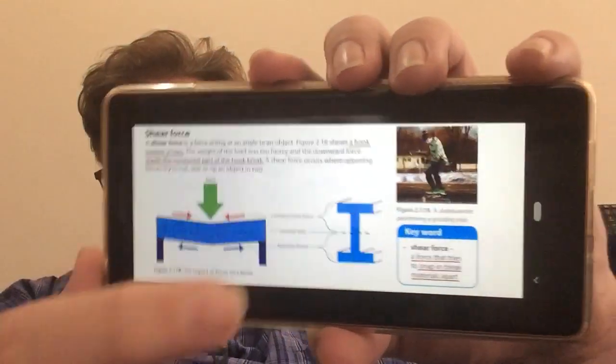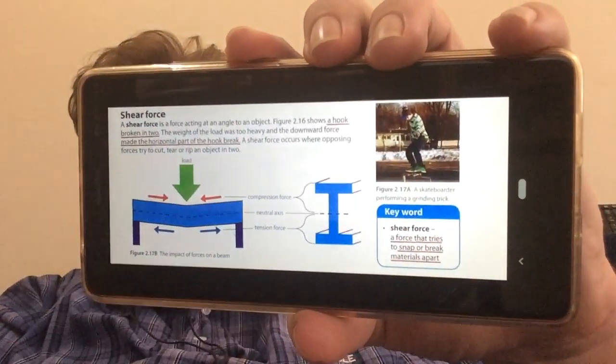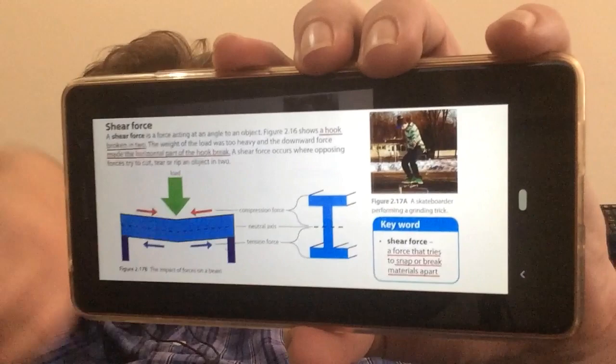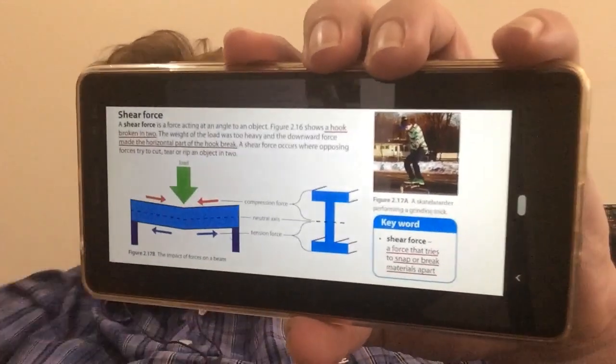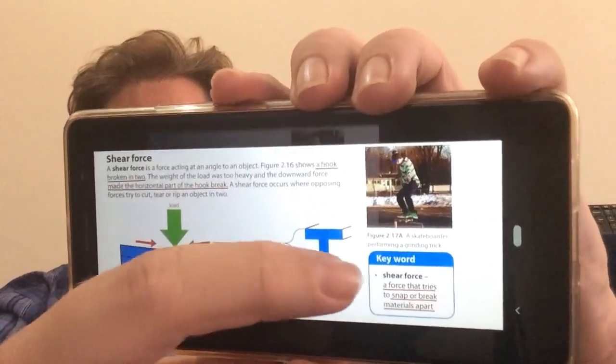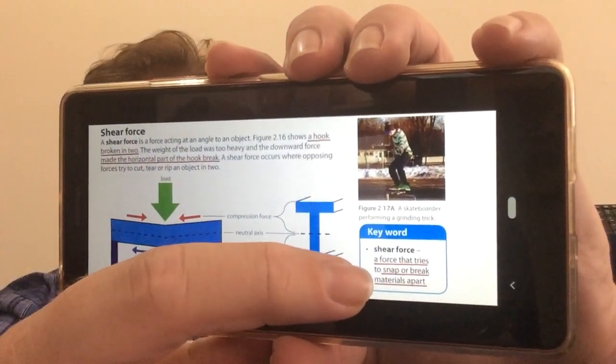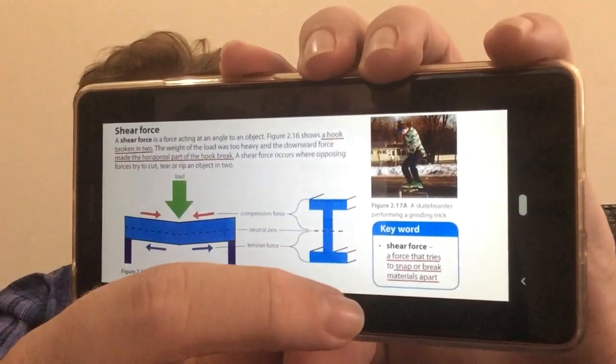So another example, shear force is a guy on a skateboard, for example, and he could shear off one of the wheels or shear one of the trucks and break the skateboard. Shear force is a force that tries to snap or break materials apart.